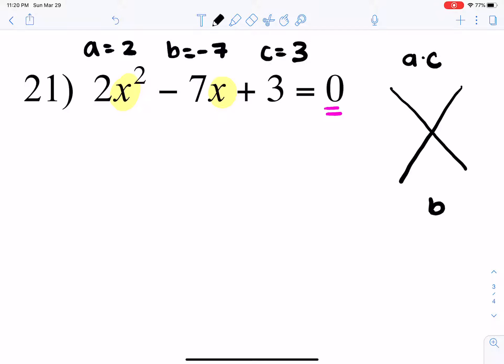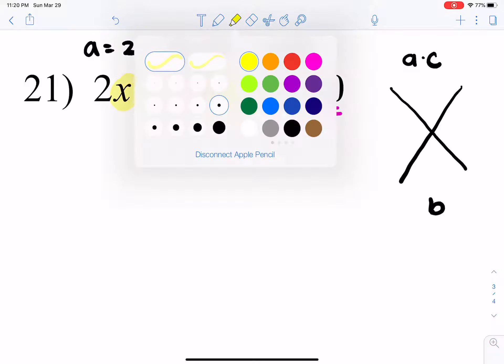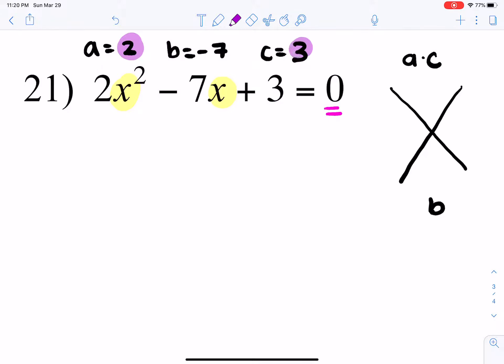a times c, which is 2, times 3 is 6, and our b value is negative 7.